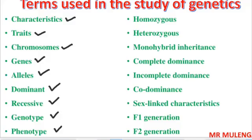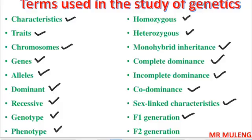Apart from these, we also have homozygous, heterozygous, monohybrid inheritance, complete dominance, incomplete dominance, codominance, sex-linked characteristics, first filial generation (F1 generation) and second filial generation (F2 generation). You must understand what each of these terms means.